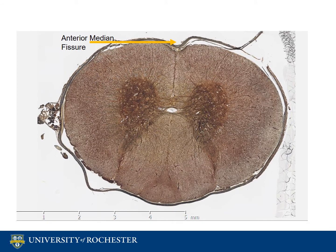If you look at the top of the spinal cord section, you will see a small indent that is the anterior median fissure. The gray matter nearest to the fissure is the anterior horn, also called the ventral horn. It contains motor neurons that relate to skeletal muscle. The white matter also on the side with the anterior median fissure is the anterior funiculus.